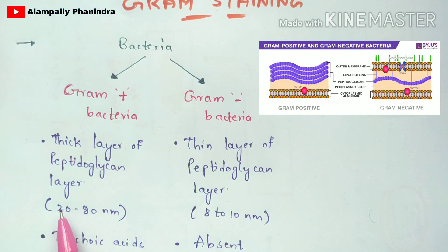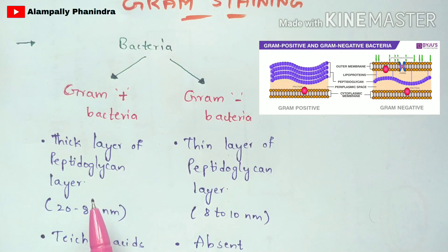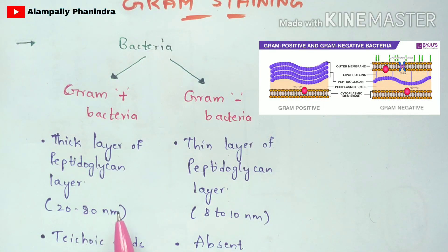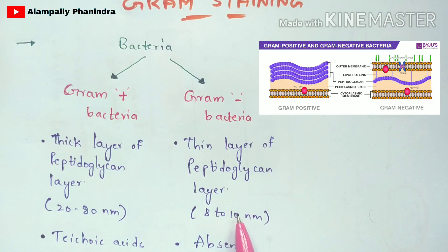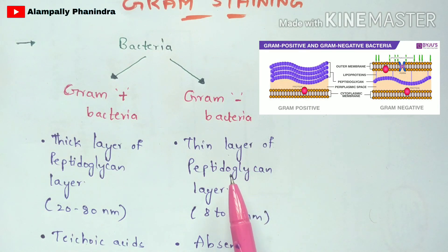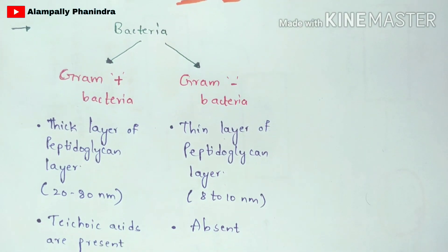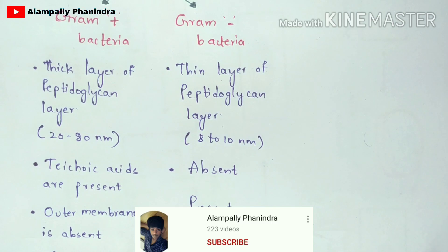In gram positive bacteria, the peptidoglycan layer is nearly 20 to 80 nanometers thick, so you can understand how thick it is. Whereas in gram negative bacteria, the peptidoglycan layer is only about 8 to 10 nanometers thick.